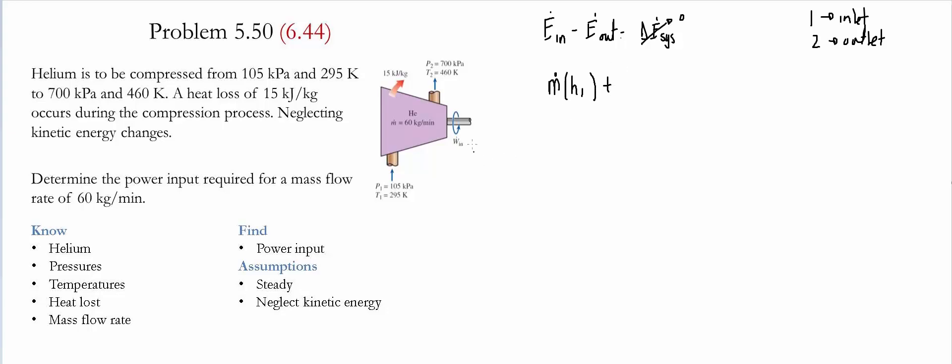We also have an amount of power going into the system provided by the shaft. And then we're going to have the rate of energy leaving equal to Q dot out plus the mass flow rate times the enthalpy at the exit. What we're looking for is the power going in. So the power going in is simply going to be equal to Q dot out plus the mass flow rate and the change of enthalpy.